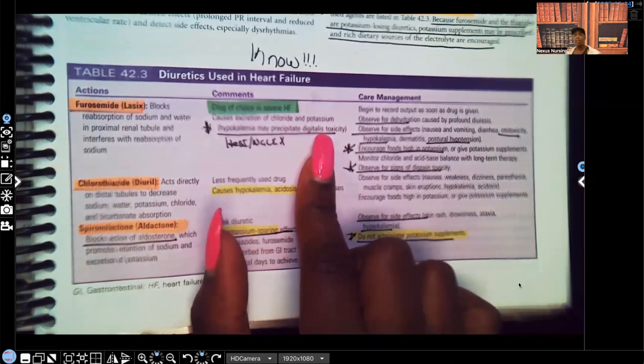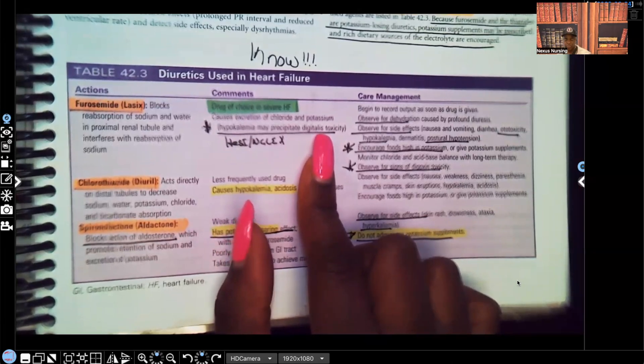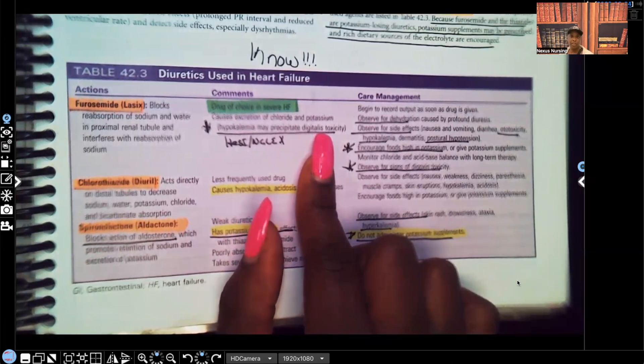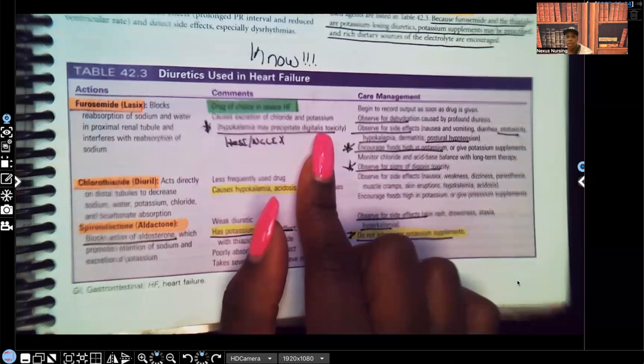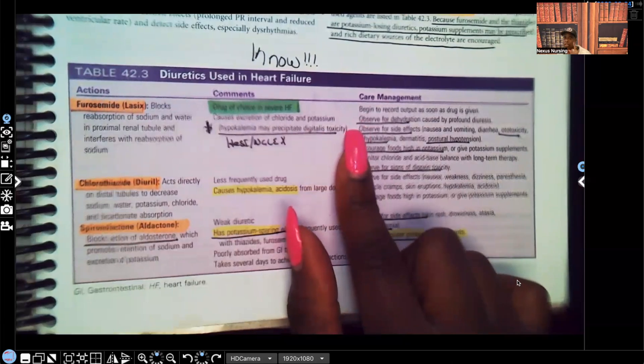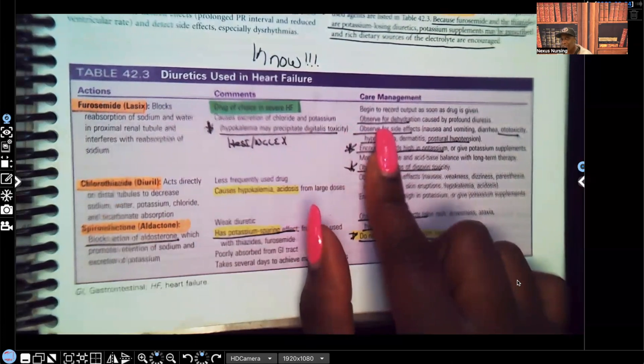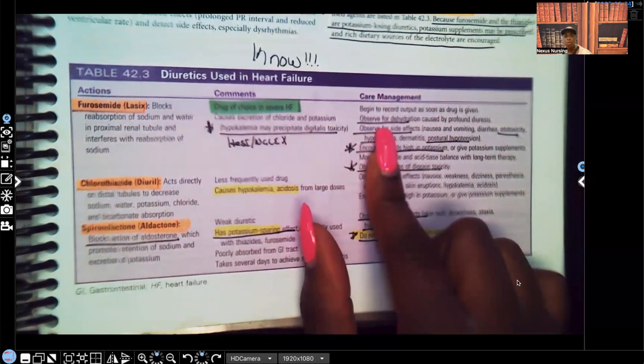Care management - what are we going to watch out in regards to this medication? Whenever you guys get a test question and they give you a diagnosis and medication, if you have no idea what that answer is, think safety. Look at the different answer choices and say to yourself, what would keep my patient safe about this medication? Even if I don't know what this medication is, what looks like a safety precaution? But anyway, let's look at the care management. You're going to observe for dehydration. Well that makes sense, this is a diuretic, it makes the patient lose fluid.